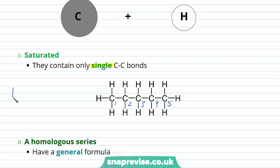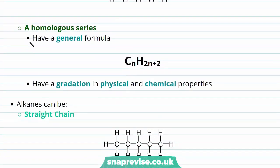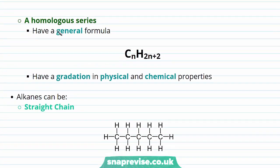We have five carbon atoms in the chain, so the stem is going to be pent. We know that the suffix for our alkanes is ane, so this is pentane. Our alkanes form a homologous series. By that we mean they have a general formula, and the general formula for our alkanes is CnH2n+2, where n is the number of carbon atoms in our molecule. And within our homologous series we see a gradation in the physical and chemical properties.